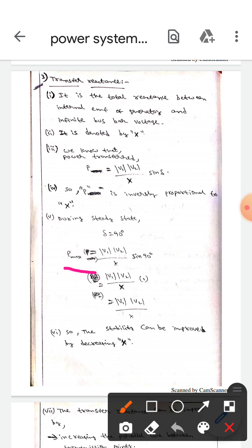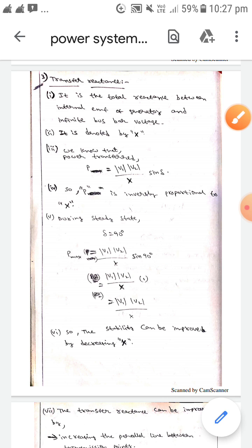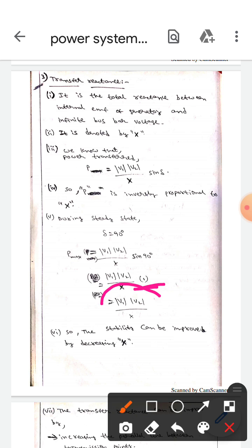The P max will be modulus of V1 into modulus of V2 by X into sin 90 degrees. Here sin 90 degrees is 1, which equals modulus of V1 into modulus of V2 by X.